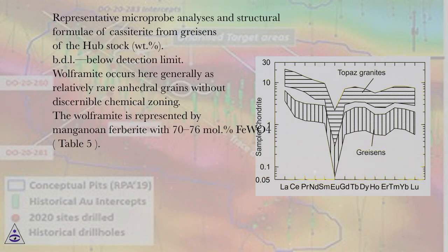Representative microprobe analyses and structural formulae of cassiterite from greisens of the Hubstock, weight percent. BDL below detection limit.